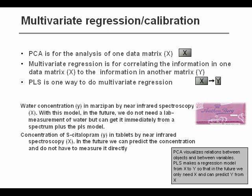When we do PCA, we have one data matrix, one table of data, and we look into the data, for example using PCA, in order to explore and visualize the data table. Multivariate regression is for the situation when you have two blocks of data. It's for correlating the information in one block to the information in another one.